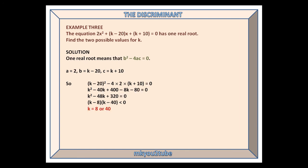Example 3: The equation 2x squared plus (k minus 20)x plus k plus 10 equals 0 has one real root. Find the two possible values for k. One real root means that b squared minus 4ac equals 0.